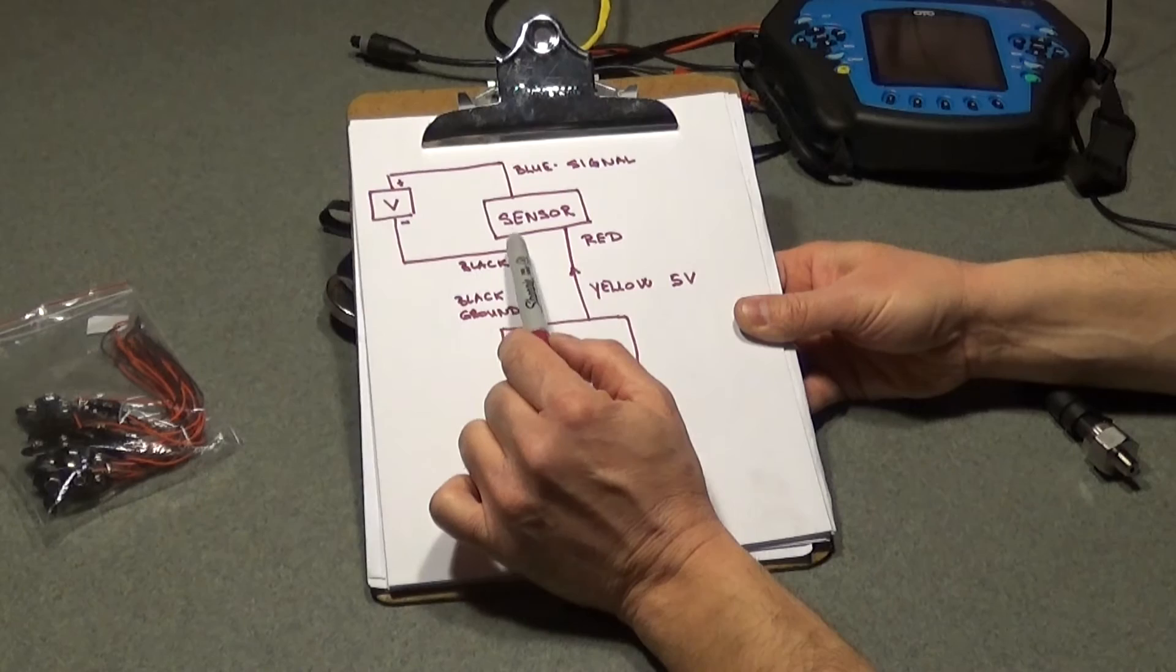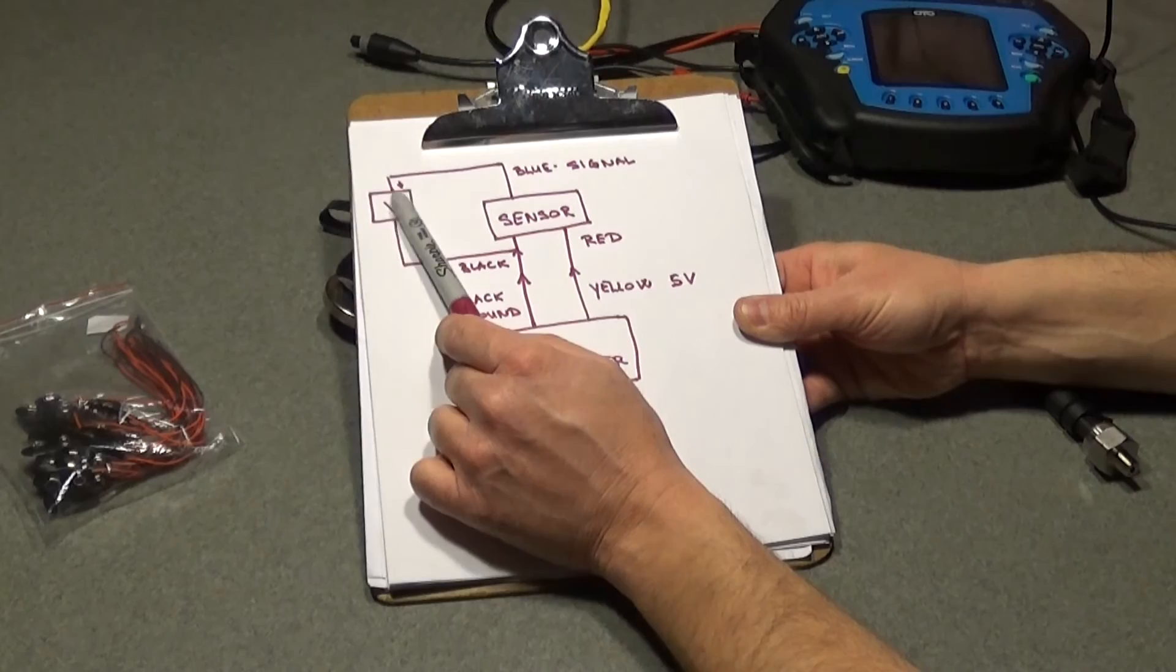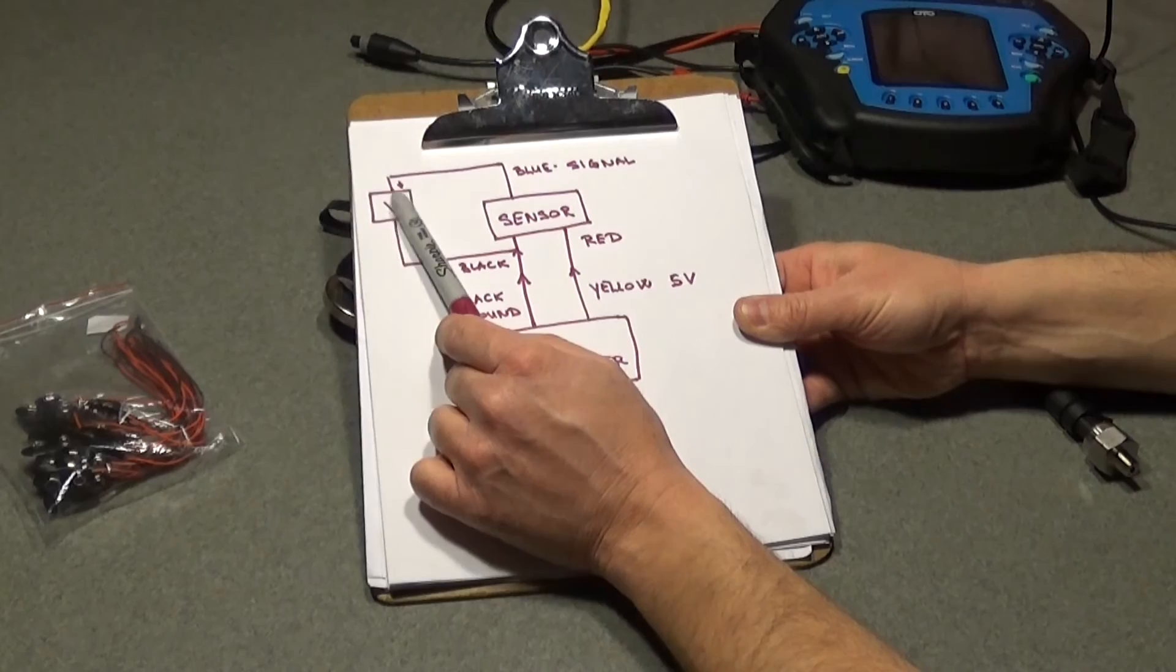Now on your black wire, you will have to splice it and take one, use this ground for your volt meter for the ground side. And your blue wire from the sensor harness is your signal wire. And you're going to use that as your positive lead for your multimeter. So you can measure the voltage from your sensor.